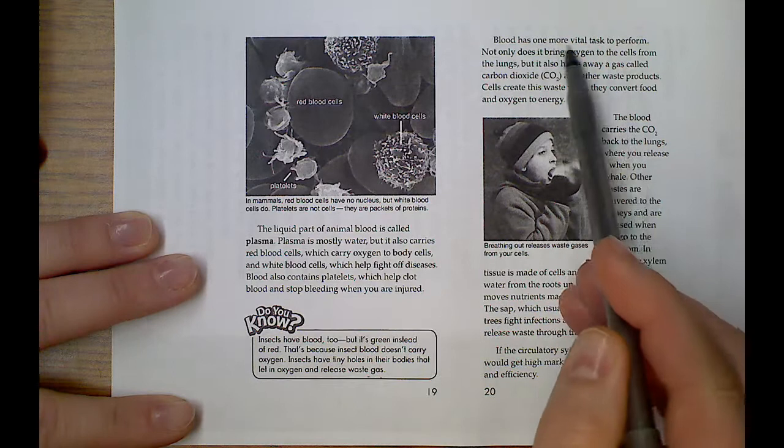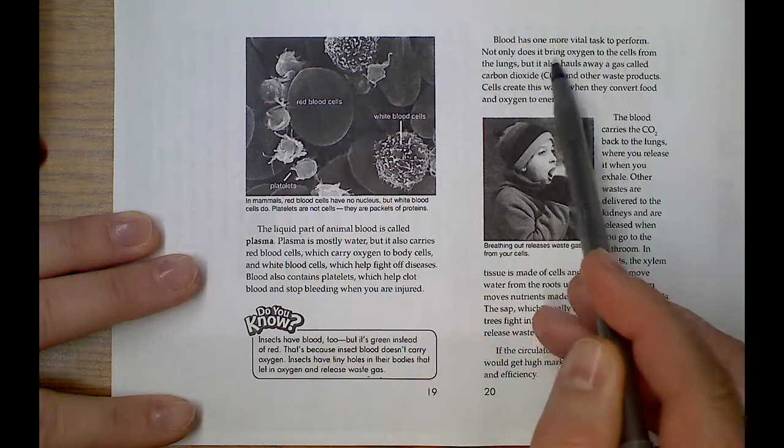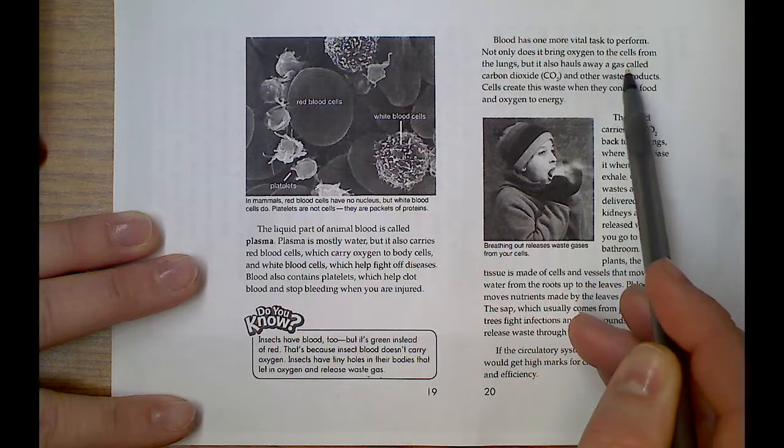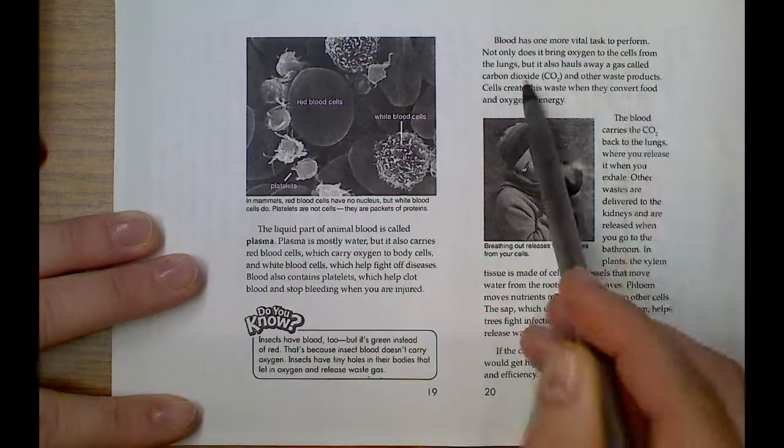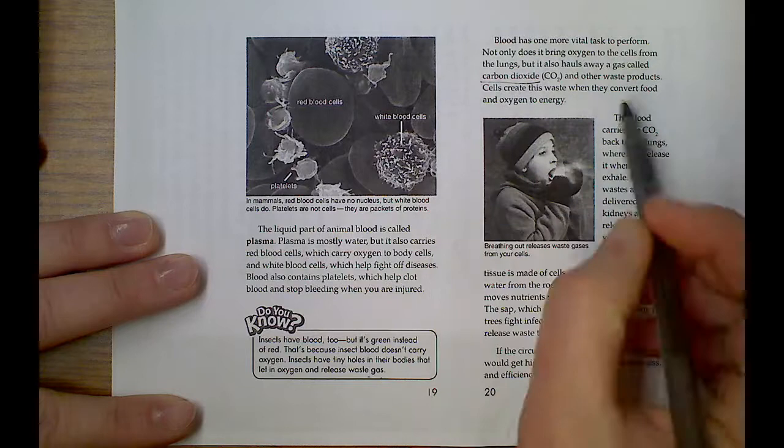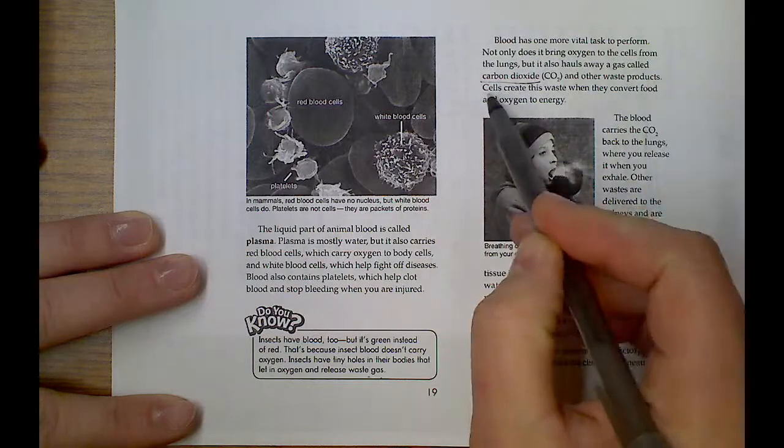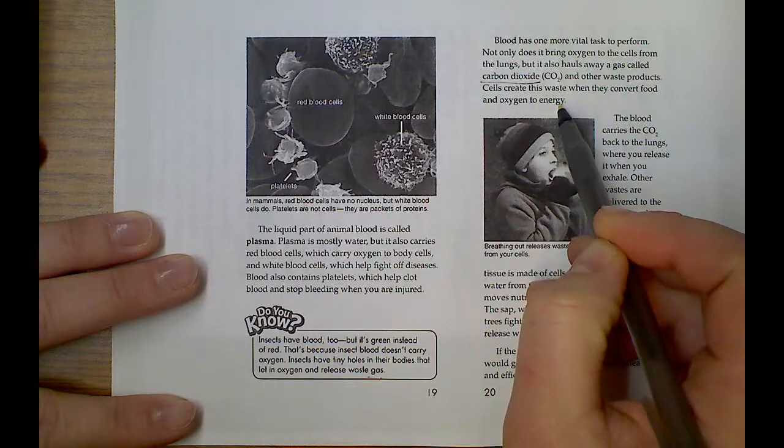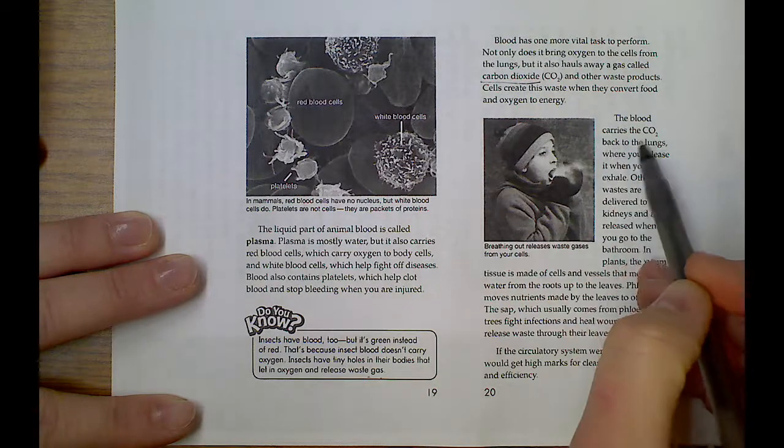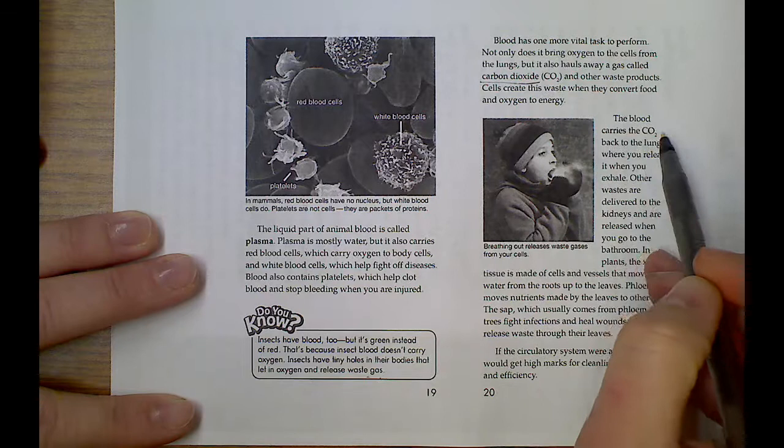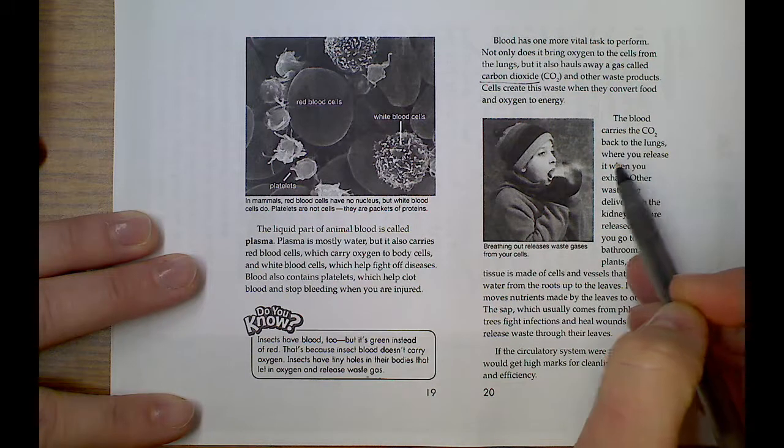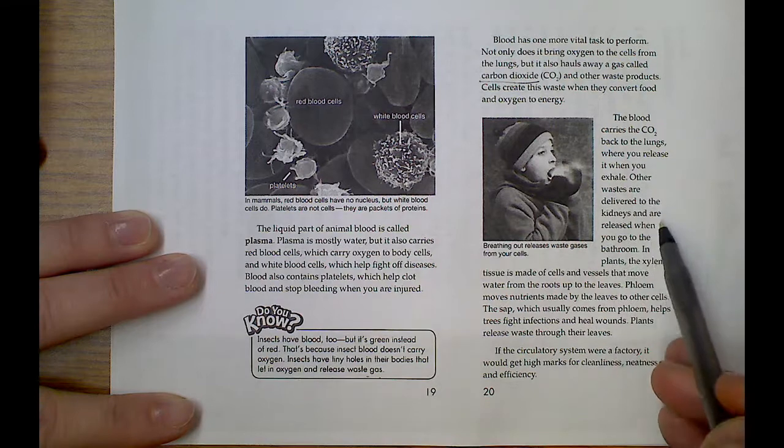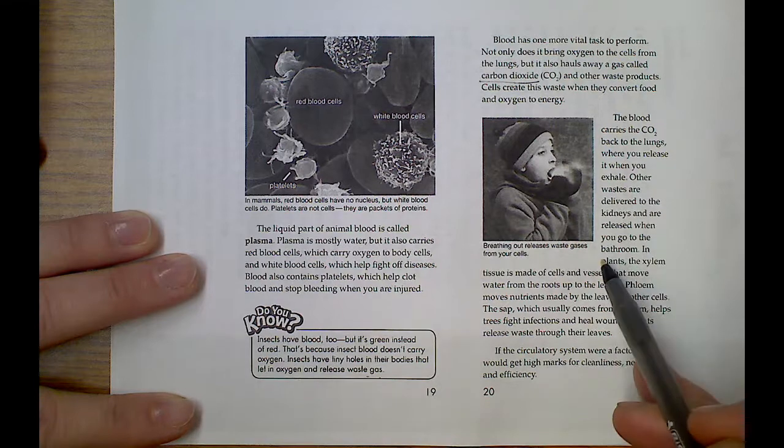Blood has one of the most vital tasks to perform. Not only does it bring oxygen to the cells from the lungs, but it also hauls away the gas called carbon dioxide and other waste products. Cells create this waste when they convert food and oxygen energy. The blood carries the carbon dioxide back to the lungs where you release it when you exhale. Other wastes are delivered to the kidneys and released when you go to the bathroom.